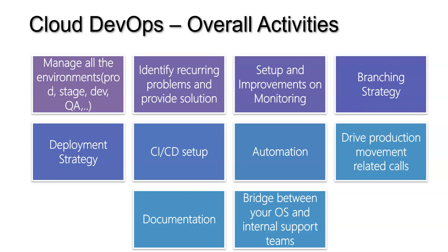Coming to setup and improvements on monitoring — one part is the complete monitoring setup, which has to be done by DevOps, and the other is making improvements. For instance, assume there was a system failure due to 100% CPU or memory consumption and no one was notified. In such cases, the improvement area is the alert or notification mechanism. DevOps can configure alerts to notify respective stakeholders when an incident occurs — for example, sending an alert when CPU consumption goes above 80%.